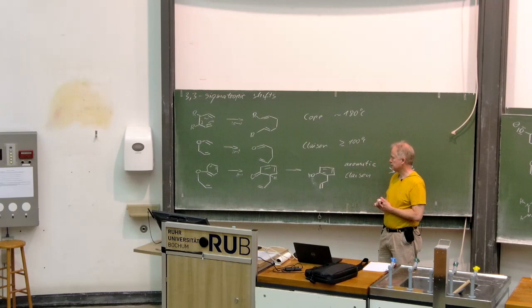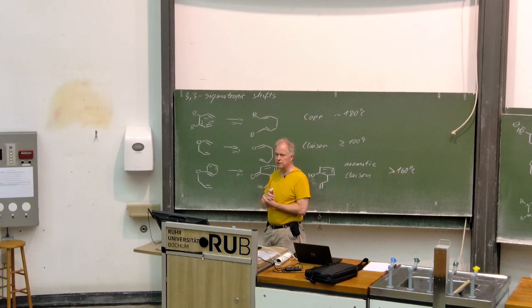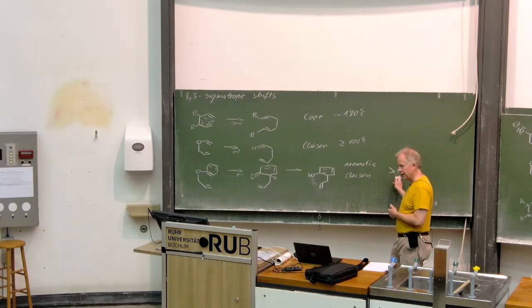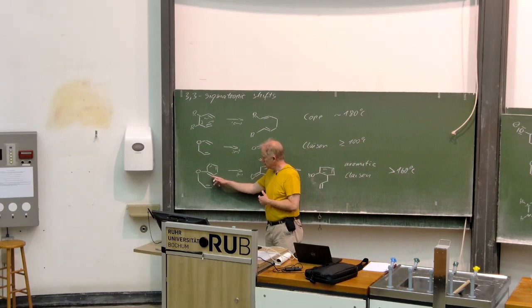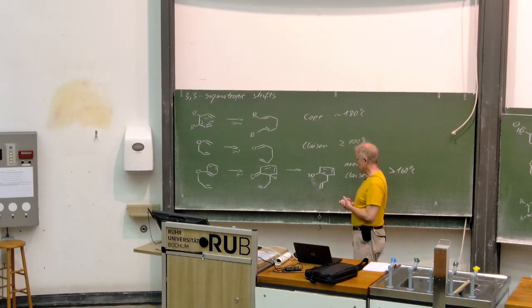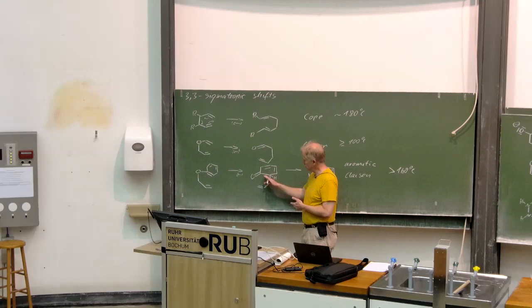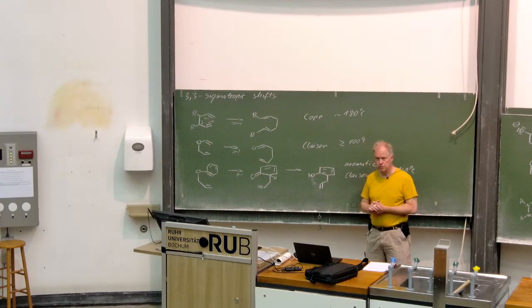We can also observe this kind of reaction with aromatically annelated systems. So an aromatic Claisen rearrangement takes place at again higher temperature above 160 degrees because you have a de-aromatization step and this affords more energy, this needs more energy. And of course, then as a very fast reaction an keto-enol-tautomerate will finally lead to this phenol with the allyl group in the ortho position.